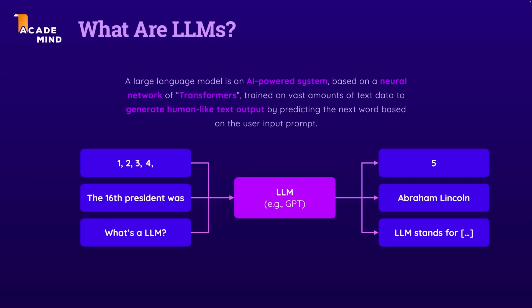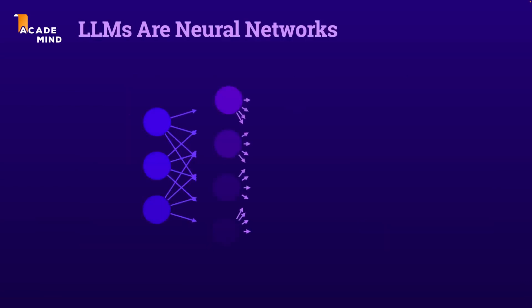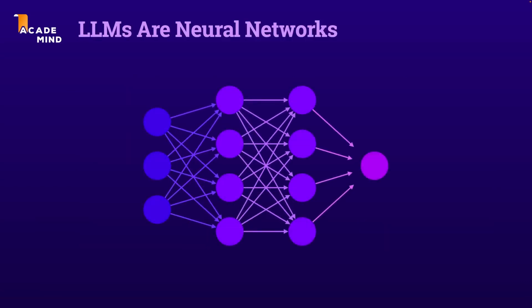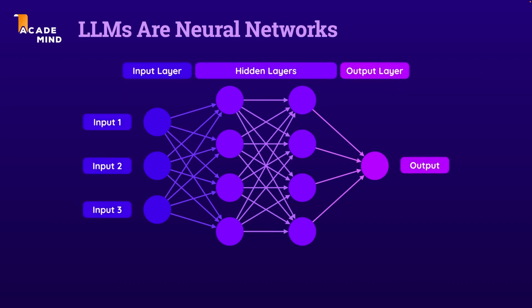As mentioned, large language models are in the end neural networks. And neural networks are in the end just machine learning models — computer programs, you could say — that connect a vast amount of input and calculation nodes organized across multiple layers to then produce an output.